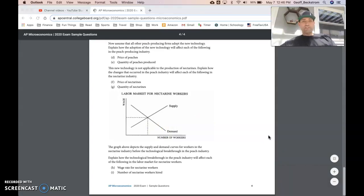The graph above depicts the supply and demand curves for the workers in the nectarine industry. So it's asking us about the concept of derived demand here. So if demand falls in the nectarine industry we should see demand fall for the factors of production for nectarines, workers being the primary factor of production presumably as they are with most industries. The graph depicts the supply and demand curve for workers in the nectarine industry before the technological breakthrough in the peach industry. Explain how the technological breakthrough in the peach industry will affect each of the following. So demand for nectarine labor is going to shift in which is going to drop the wage. So wage rate is going to fall and the number of workers hired to produce nectarines will also fall.